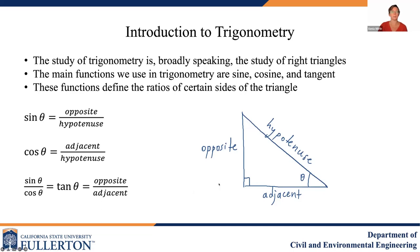Let's redefine what we know from trigonometry. Trigonometry is, broadly speaking, the study of right triangles. The main functions we use are sine, cosine, and tangent, and these functions define the ratios of the lengths of certain sides of the triangle, all based on a relative angle. The sine of angle theta is the length of the opposite side divided by the length of the hypotenuse. The cosine of this angle is the length of the adjacent side divided by the length of the hypotenuse. And the tangent of this angle, which is also equal to sine divided by cosine, is equal to the length of the opposite side divided by the length of the adjacent side.